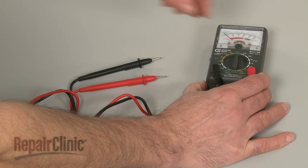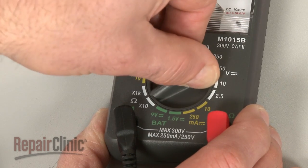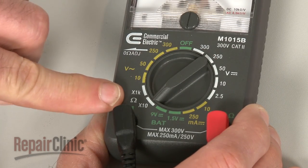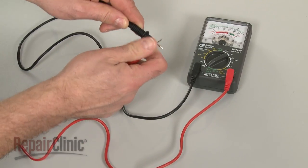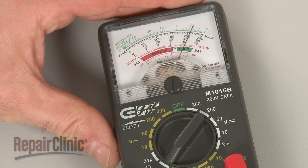When using an analog model, first rotate the range selection dial to the lowest setting for ohms of resistance. Then calibrate the meter by pinching the probes together while adjusting the needle to read zero.